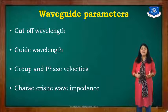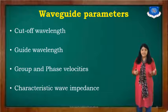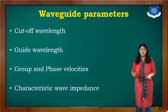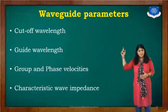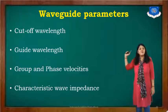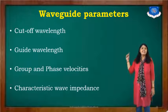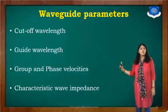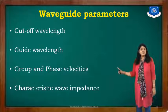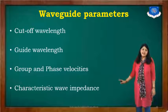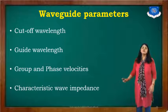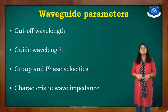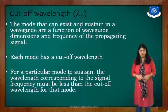Which are the waveguide parameters? The first parameter is cutoff wavelength, the second is guide wavelength, the third one is the group and phase velocities, and the fourth one is the characteristics wave impedance.